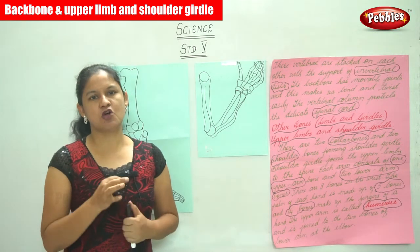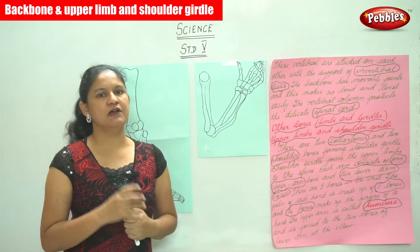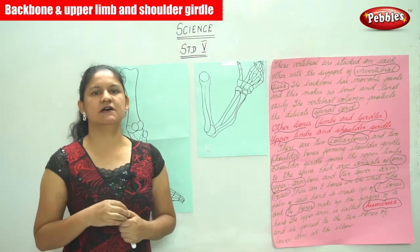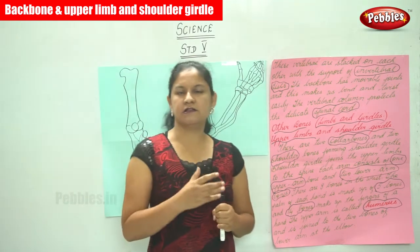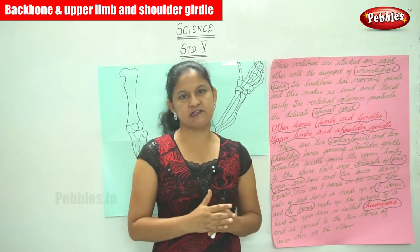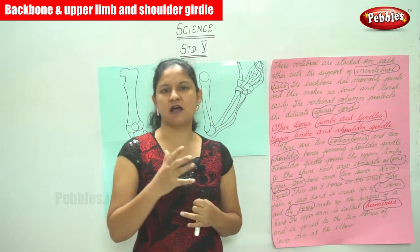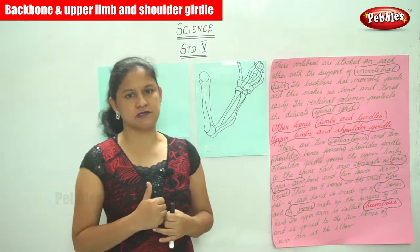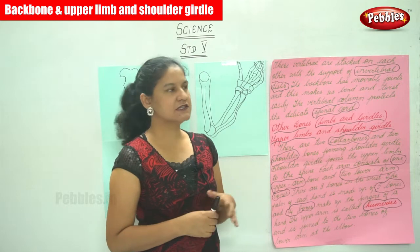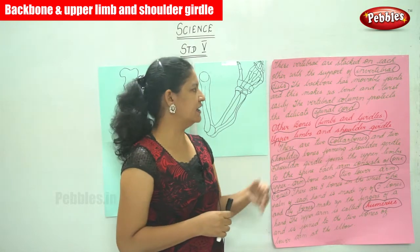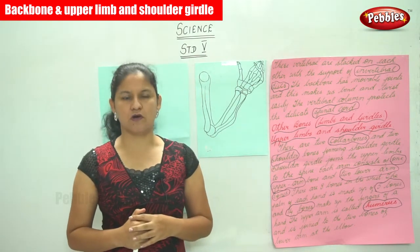Each and every component of the skeletal system protects a particular internal organ. The skull protects the brain, the rib cage protects the heart and lungs, and the vertebral column protects the spine, which is a very delicate organ.